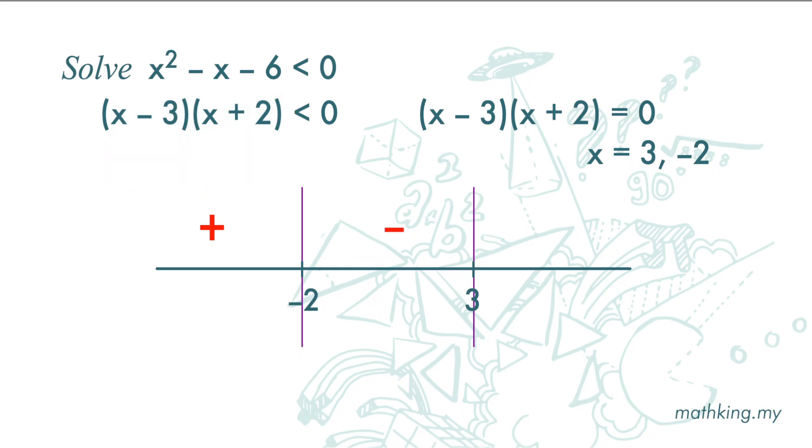And finally, we move to the right hand side. Again, we pick a test point. Let's say x equals 4. And we plug in 4 into here and we get a positive value.